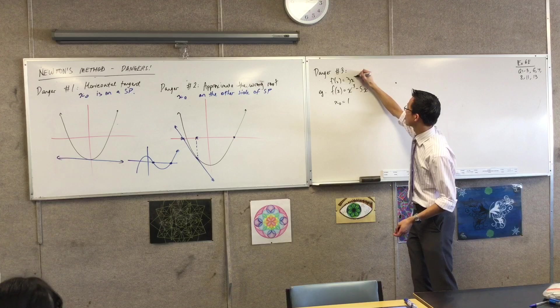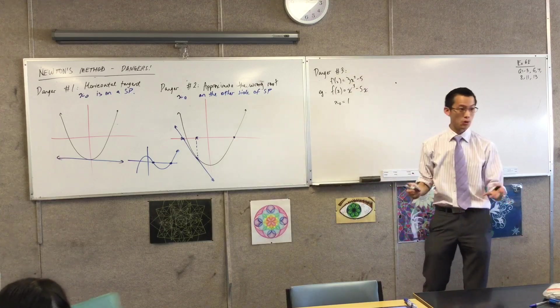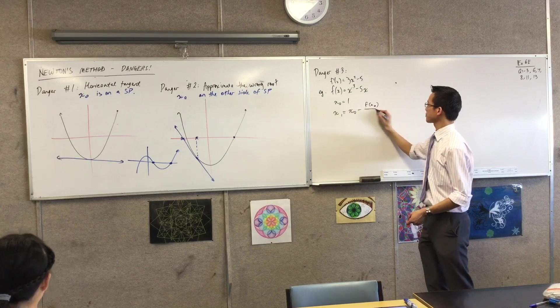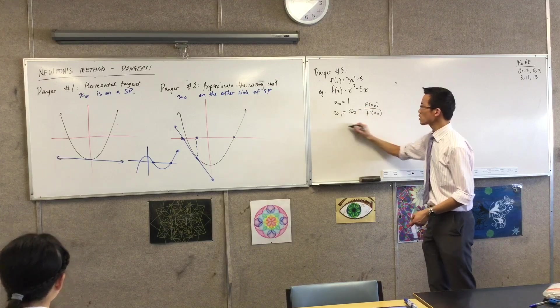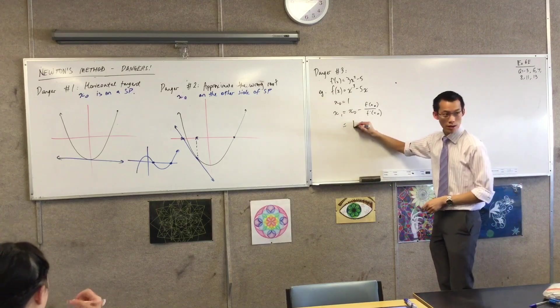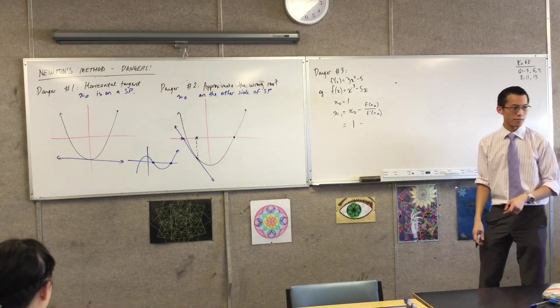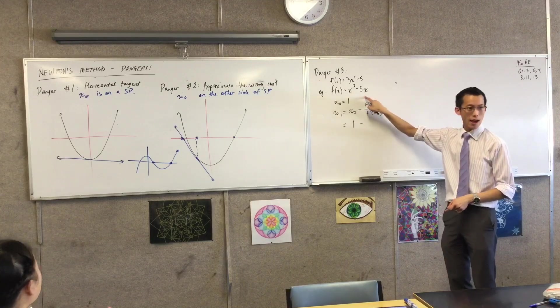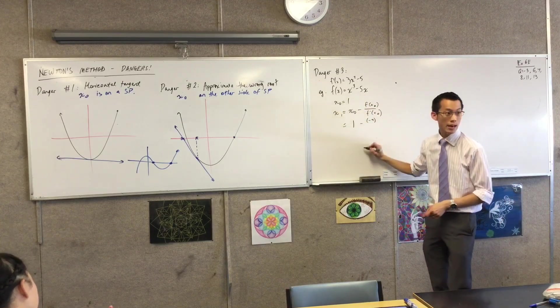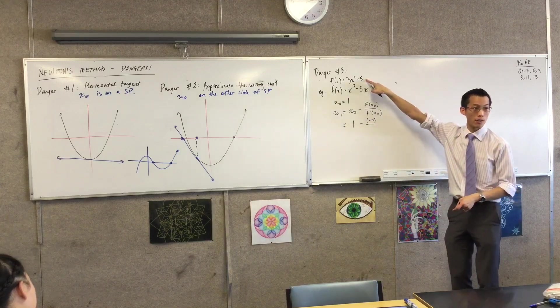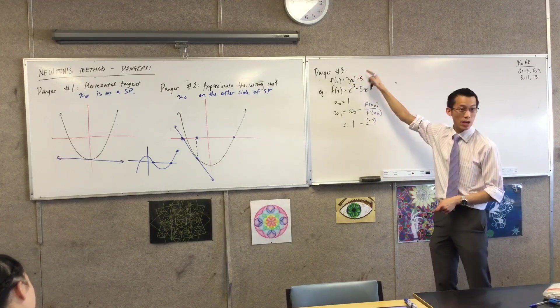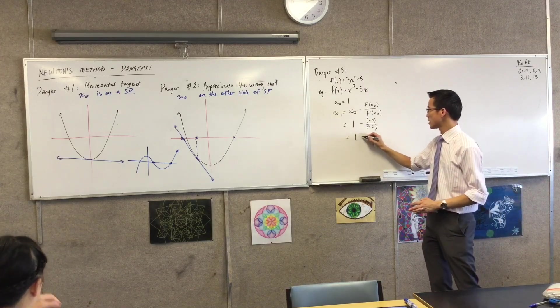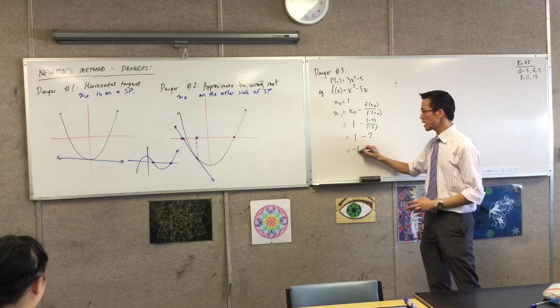3x squared minus 5. So now, watch as I compute x1. x1 is equal to... I'll just write out because I rubbed it off. This is the formula. And let's see what happens as I evaluate. So x0 is 1. What's f of 1? It's 1 take away 5, right? So that's negative 4. Do you agree with that? What's f' of 1? Looks like 3 take away 5 which is negative 2. Are you okay with that? Yeah, it looks good. So that's 1 take away negative 4 over negative 2 which is negative 1.